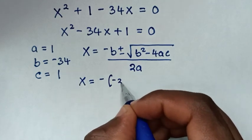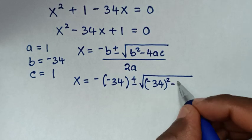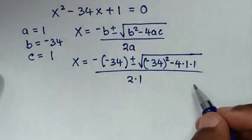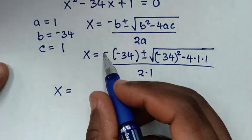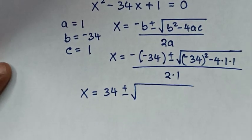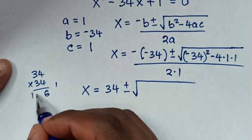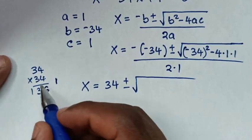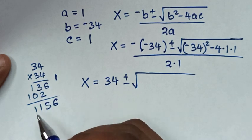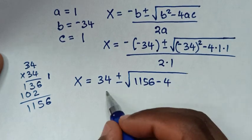Then it will be x is equal to: negative b is negative (negative 34), so positive 34, plus or minus square root of b squared — that is (negative 34) squared — then minus 4 times a is 1 times c is 1, over 2 times a is 1. So 34 squared is 1156, and negative 4 times 1 times 1 is negative 4, over 2.